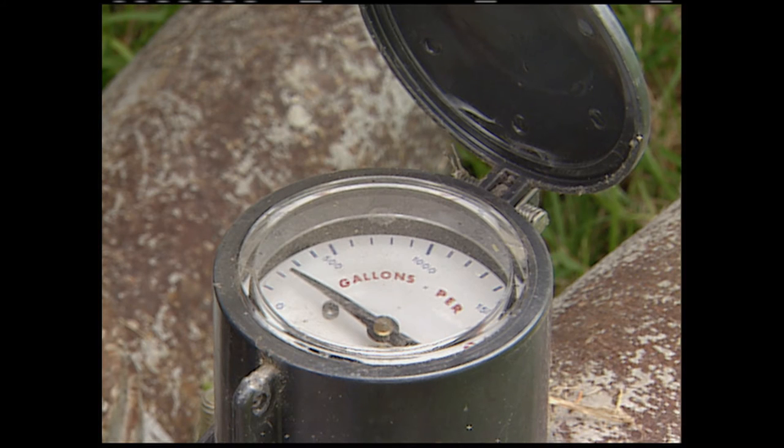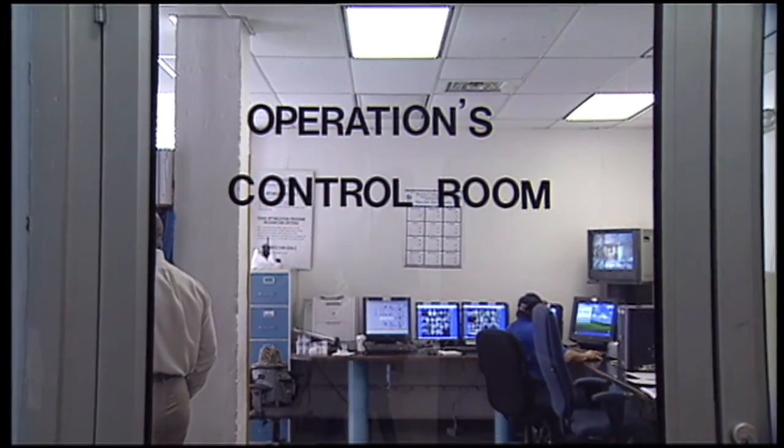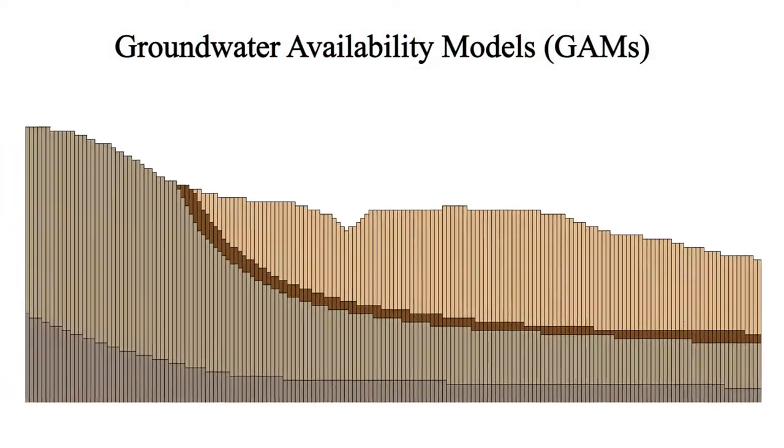To tackle the challenges of water level declines, the State of Texas incorporates the best available scientific methods in groundwater management and planning. A critical component in the State's planning process is the Texas Water Development Board's Groundwater Availability Models Program.